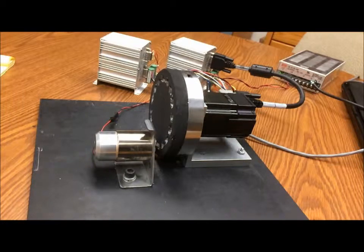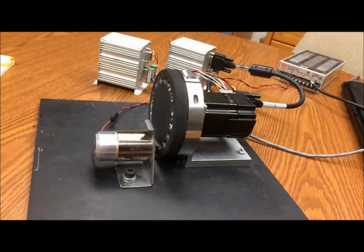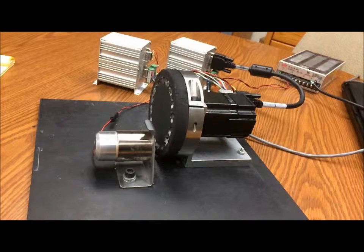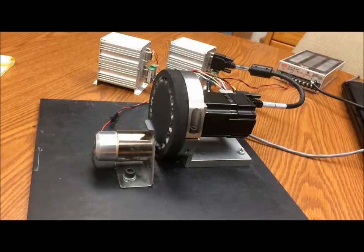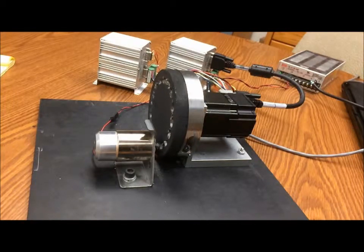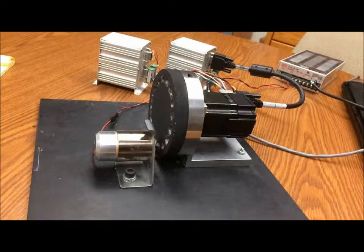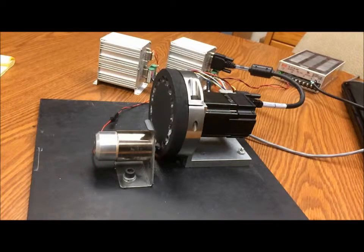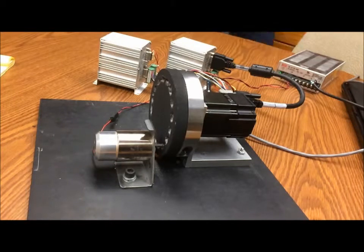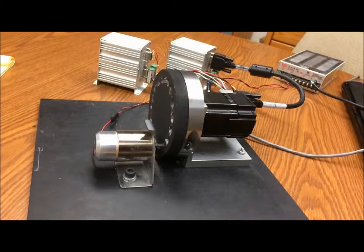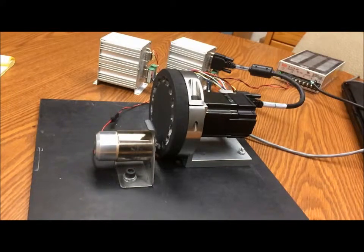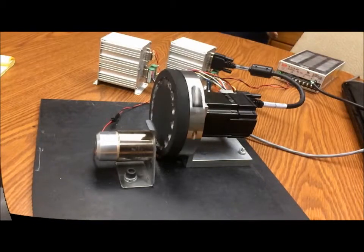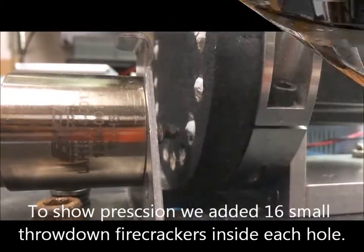The video shows a flywheel indexing 16 positions per revolution. At each index, the servo motor controller commands the voice coil controller via CAN open network to extend and retract. After the voice coil extends and retracts, a command is transmitted to the servo controller to indicate it's clear to rotate to the next index. The indexing operation repeats with varying timing moves and different dwell times to show software flexibility.